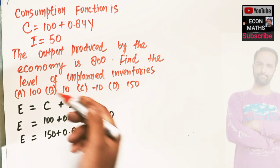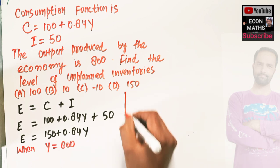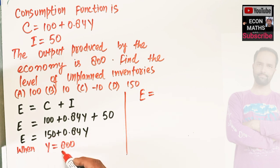Now, we are being told that output produced is 800. When output is equal to 800, then what will be our expenditure? Then expenditure is equal to, just plug in Y = 800 in this equation.